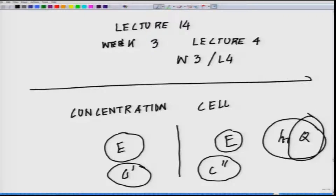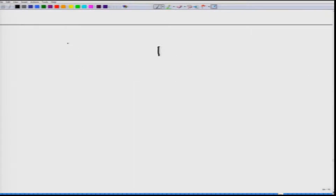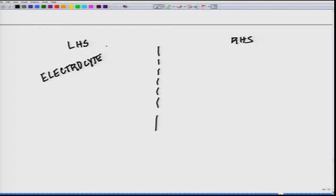That brings us to the point: where is the relevance of such a situation in biology? Before we get into that, let's talk about the principle underlying the concentration cell. In particular, it is important where solutions of electrolyte with different concentrations — say on the left-hand side and right-hand side — are separated. So you have electrolyte on one side and electrolyte of a different concentration on the other side.